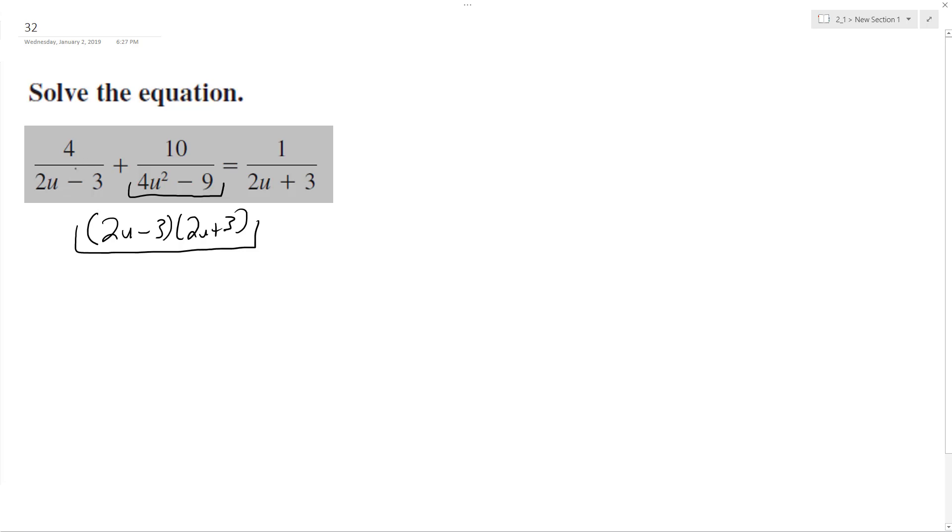So on the left part of the equation, all we're missing is 4 quantity 2u plus 3. And then we'll have this plus 10, and this is all over 2u minus 3, 2u plus 3. Then we have 1 times 2u minus 3 over 2u minus 3, 2u plus 3.